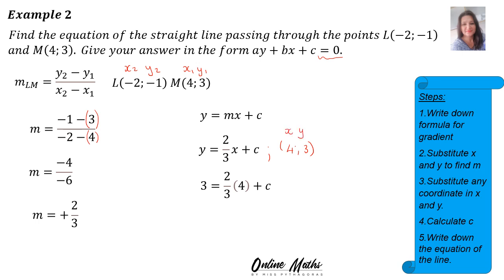In y's place I substitute 3. In x's place I substitute 4. Then this will become 3 is equal to 8 over 3 plus c. And then 3 minus 8 over 3 equals c. And then 3 minus 8 over 3 is equal to a third. That's c's value. Therefore, there's your equation: y is equal to 2 over 3x plus a third.